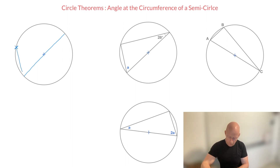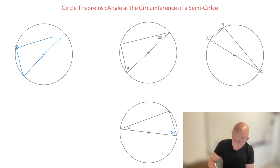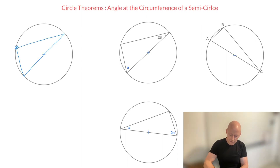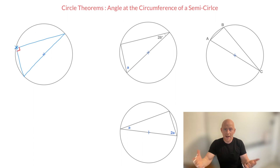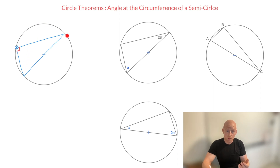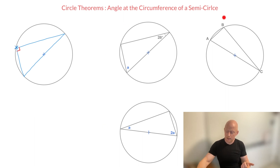Then the angle formed by joining this point to the endpoints of the diameter will be a right angle. So if I draw this chord right here as well as this chord right there, this angle must be a right angle. And that will be true regardless of where I place this point along the circumference of the semicircle. It's worth sketching a few semicircles on your own just to convince yourself of this — the angle at the circumference will always be a right angle. Because of how much we study right angle triangles, this rule is often used in exam questions.